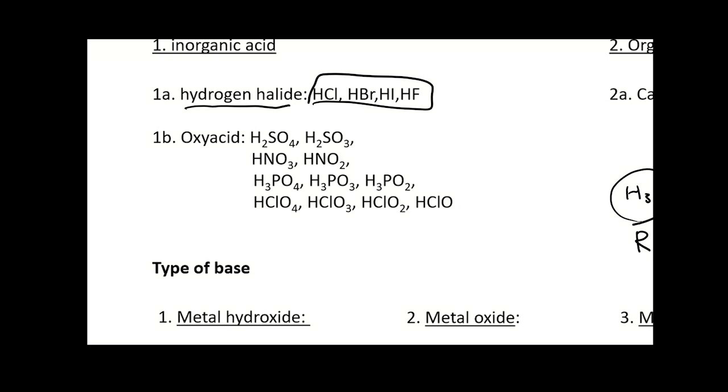Another type of acid is called the oxyacid. If you see the sulfur, nitrogen, phosphorus, or halide, we'll just say halide O, this type of group appears inside your chemical structure, then there will be so-called the oxyacid.